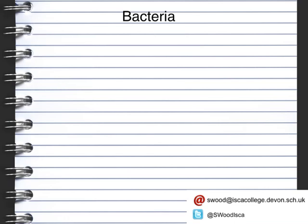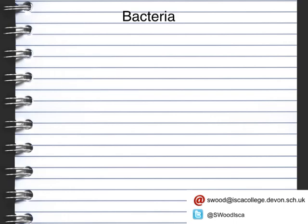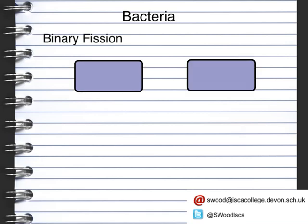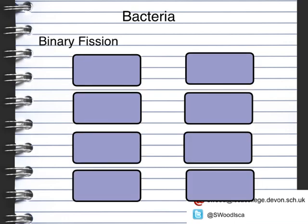Bacteria are a very unique organism as they're able to survive in a variety of different habitats — for example, they can live inside hot springs, peat bogs, and even inside humans. Bacteria cells can also reproduce via binary fission, where each cell reproduces to form a genetically identical cell. So one cell becomes two, then four, then eight, then sixteen cells.